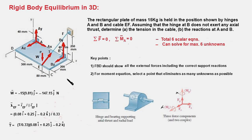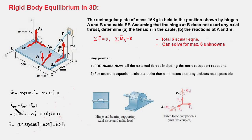Having completed the FBD, let us compute the value of W and write the tension force in vector form. W is mg, and the mass of the rectangular plate is given as 15 kg, so W = 147.15 N. To write force T in vector form, we first find a unit vector along line EF, which is λ_EF = r_EF / |r_EF|.